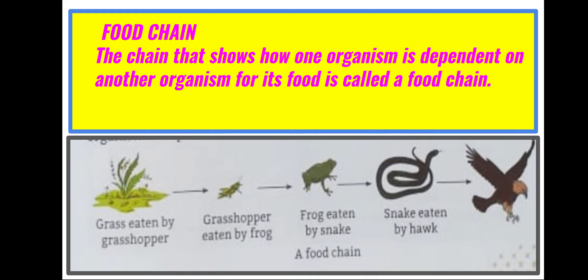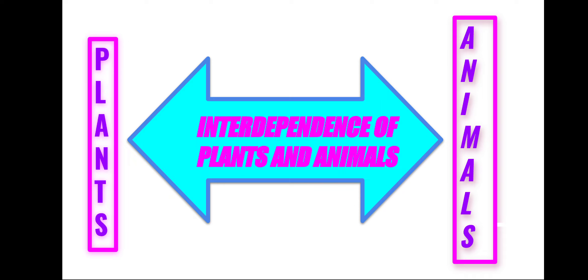Herbivores are animals that eat only plants and carnivores are animals that eat other animals. Thus, a food chain can be defined as a chain that shows how one organism is dependent on another organism for food. Now let us know how plants and animals depend on each other in nature.